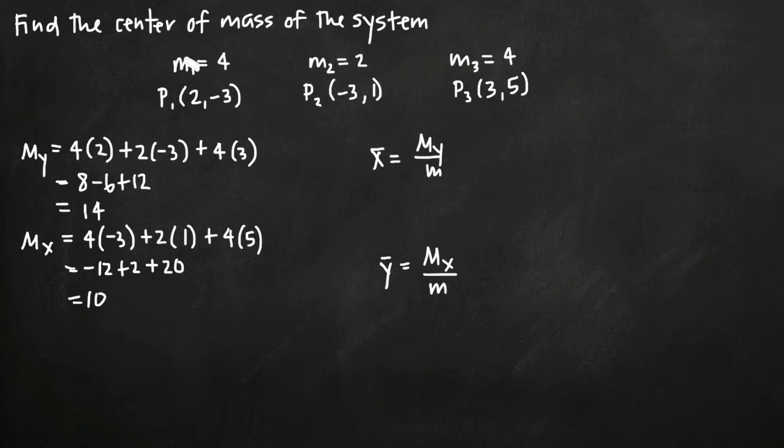So what this means is that mass 1 has a mass of 4 and it's located at the specific coordinate point (2, -3). We have two other masses at two other points and we've been asked to find the center of mass of this system.